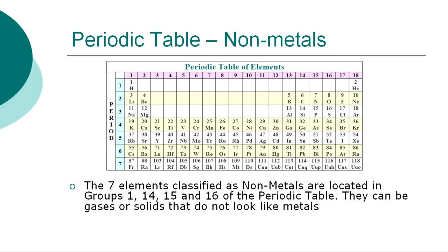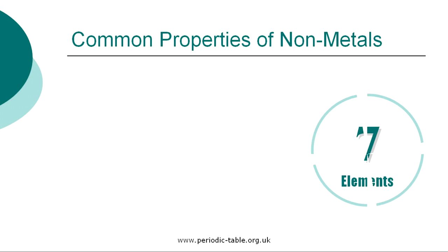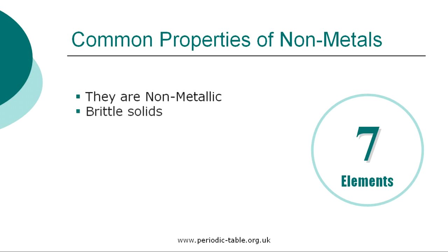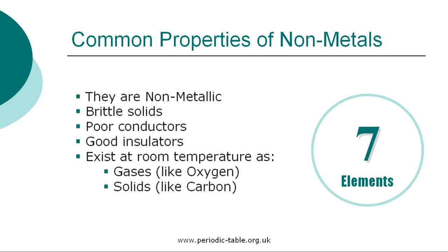The seven elements classified as non-metals are located in groups 1, 14, 15, and 16 in the periodic table: hydrogen, carbon, nitrogen, oxygen, phosphorus, sulfur, and selenium. The non-metals are elements that do not look like metals and can be described as brittle solids. They are poor electrical and thermal conductors but are great insulators. Non-metallic elements exist at room temperature as gases such as oxygen and also as solids such as carbon.